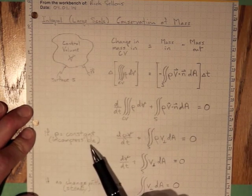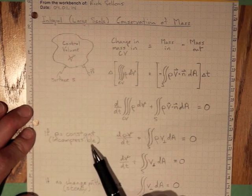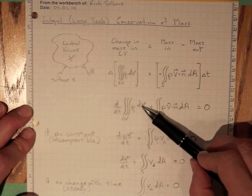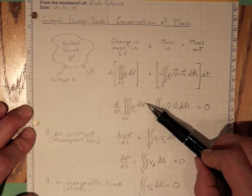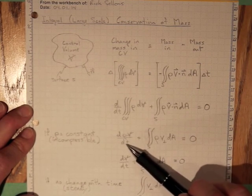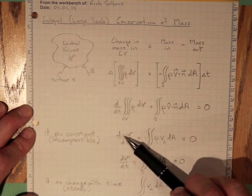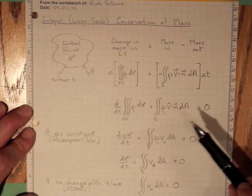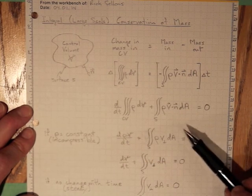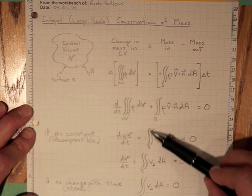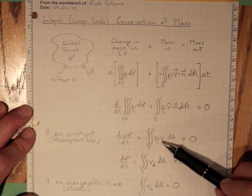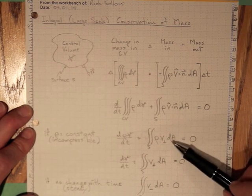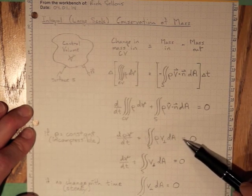So if the density is constant, if the flow is incompressible, then density is constant, it comes out. The integral dV over the volume is just the total volume. And you get the rate of change with time of the density, which is constant, times the volume, which is also constant, plus the integral over the surface rho V perpendicular, because that's V dot n, times dA, equal to zero.